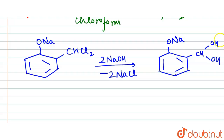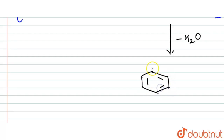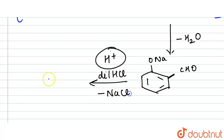After this, we have the removal of the water molecule, then the formation of the product that is ONa-CHO. After this, we have dilute HCl, or H plus, and we have the removal of NaCl.